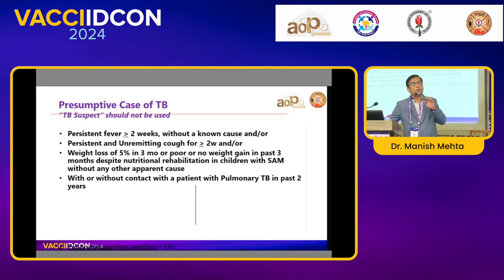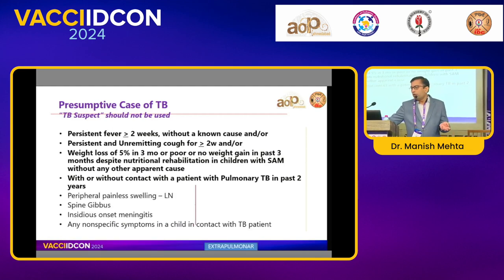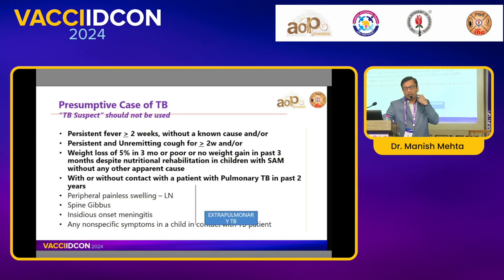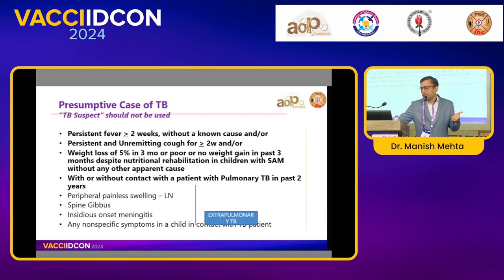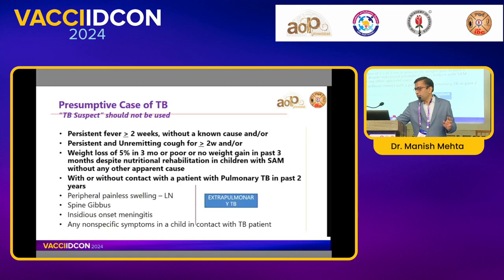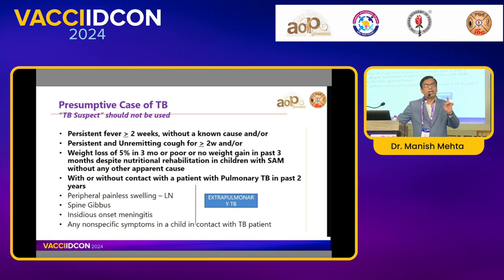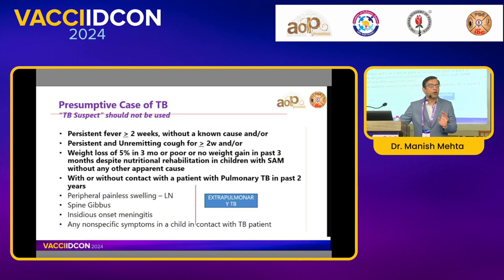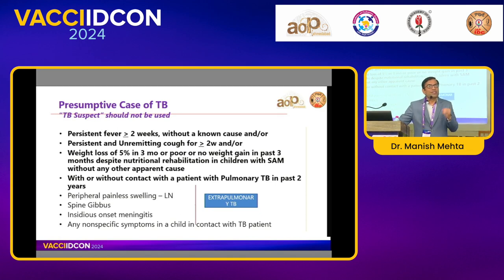In children, extra-pulmonary tuberculosis is much more common than pulmonary tuberculosis. So we have to look for peripheral painless swellings, lymph nodes, spinal gibbous, meningitis. Or if there is any non-specific symptom with a history of contact with a TB patient, we have to think of tuberculosis. If a child has history of contact with a TB patient but no classical symptoms, we still have to suspect tuberculosis. These are the criteria on which we will suspect tuberculosis — not diagnose, just suspect.